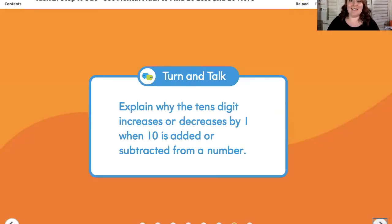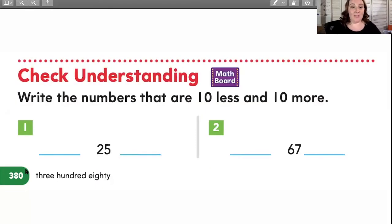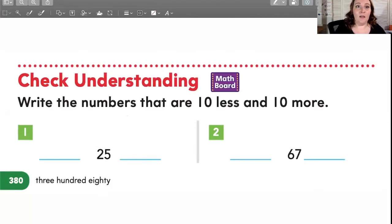Explain why the 10's digit increases or decreases by 1 when 10 is added or subtracted from a number. Next, let's take a look at the bottom of page 380. Check your understanding. Write the numbers that are 10 less and 10 more. So for number one, my number is 25. So 10 less means that I am going to take away one group of 10. If I take away one group of 10, that would leave me with 15.